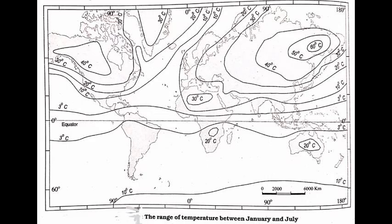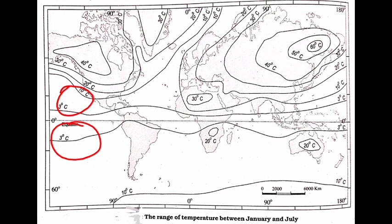Looking at the figure, we are discussing the range of temperature. The highest range of temperature — more than 60 degrees Celsius — is over the north-eastern part of the Eurasian continent. The lowest range of temperature — below 3 degrees Celsius — can be seen between 20 degrees south and 15 degrees north. This is your annual range of temperature.